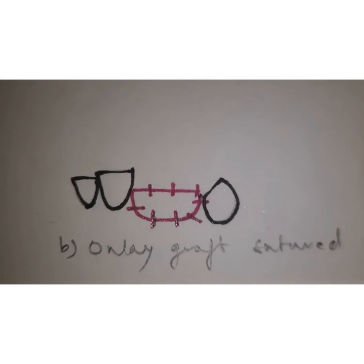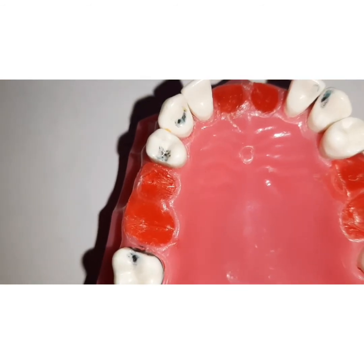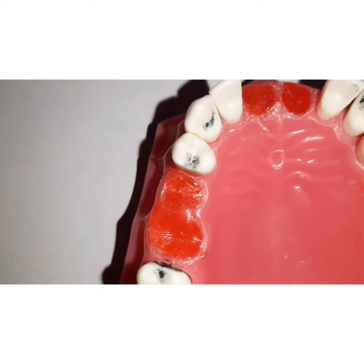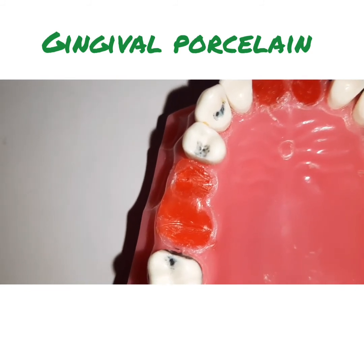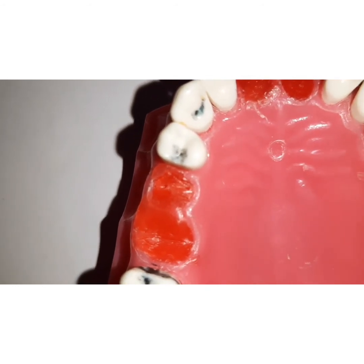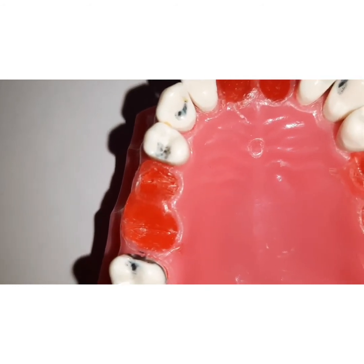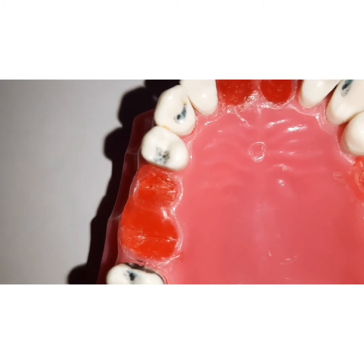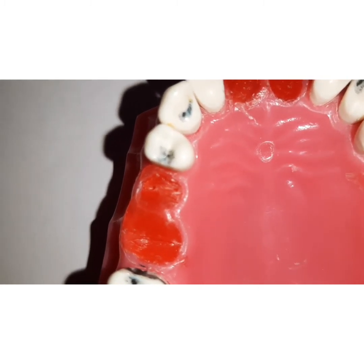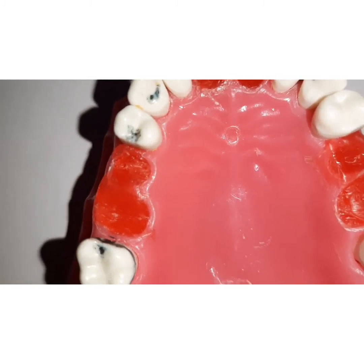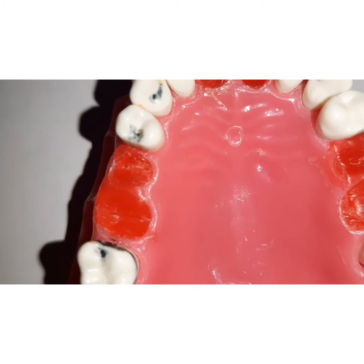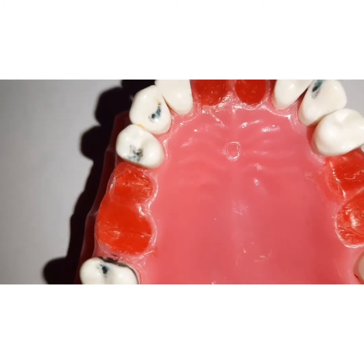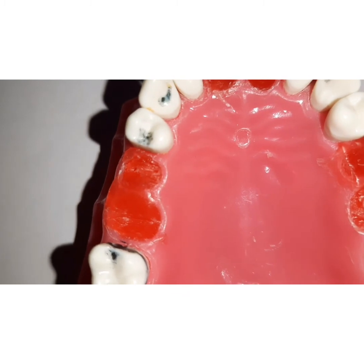When the amount of residual ridge defect is minor, another method is to use gingival porcelain. This is helpful in the mandibular molar or mandibular incisor region — you add a small amount of pink porcelain to simulate the gingiva and interdental papilla. However, this method is only suitable for mild defects. If the defect is severe, it will look unaesthetic with black triangles, food lodgment, and plaque accumulation.